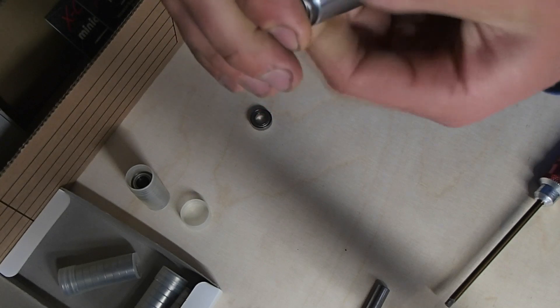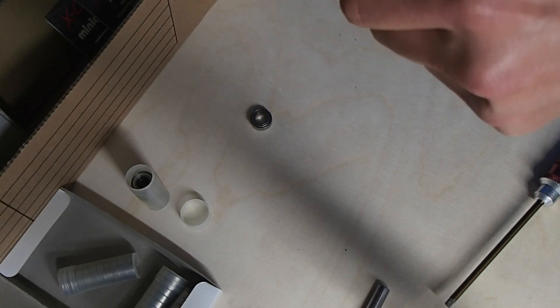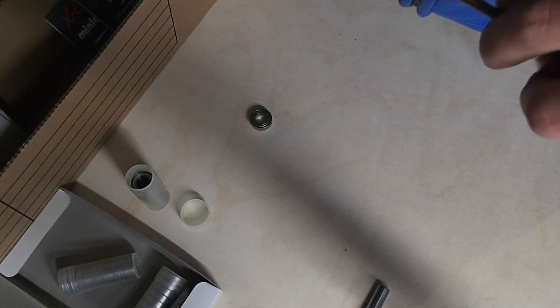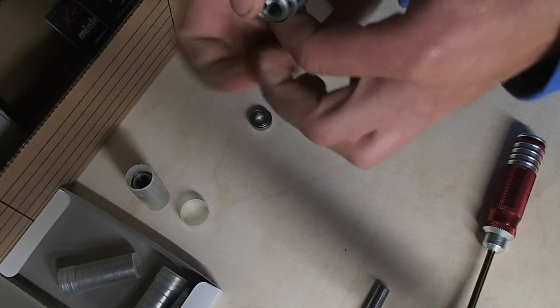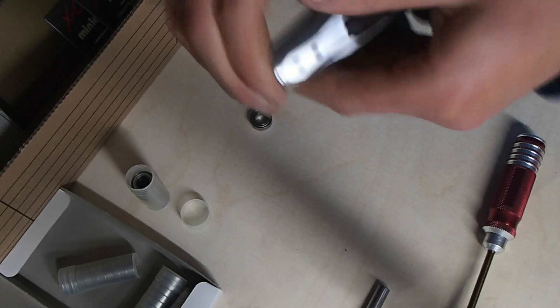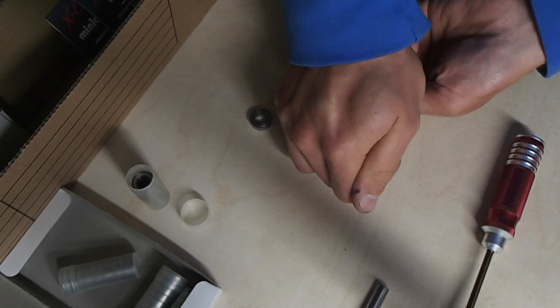So after you take everything out, you press the new bearings in, press the new rear bearing, or inner bearing rather, in, and that's fairly straightforward - press it in, you're done.